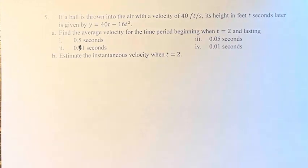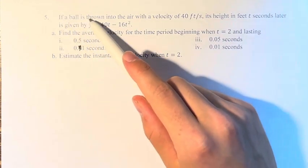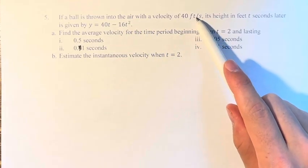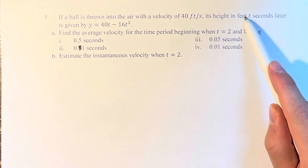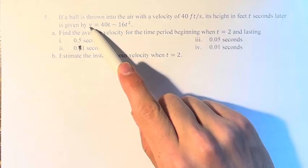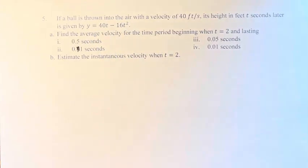Hello and welcome back to another video. In this problem, we're told if a ball is thrown into the air with a velocity of 40 feet per second, its height in feet t seconds later is given by y equals 40t minus 16t squared.